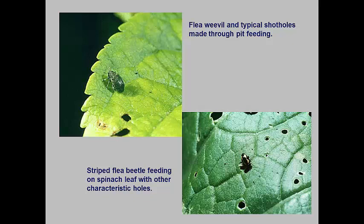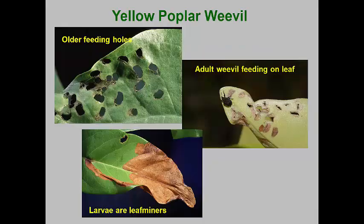Numerous caterpillars chew irregular holes in host plant leaves. Those species that become medium-sized or larger often turn into general leaf eaters and defoliators. Several species of leaf beetles also make holes in host leaves. The tortoise beetle group is one of the subfamilies of leaf beetles — the larvae of tortoise beetles are usually leaf skeletonizers, but the adult beetles simply make irregular holes in leaves. The yellow poplar weevil has a rather unique feeding method that produces bean-shaped holes in leaves. The adult weevils skeletonize bean-shaped patches on favored host trees, such as tulip tree and deciduous magnolias, and the left-behind epidermis soon dies and dries out to leave bean-shaped holes in host leaves.